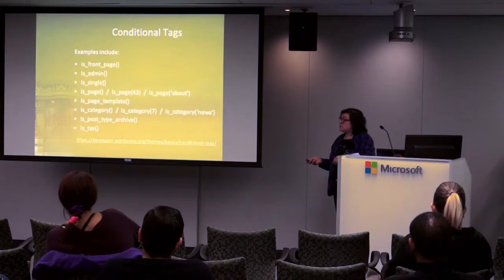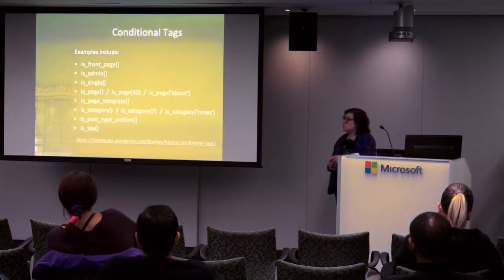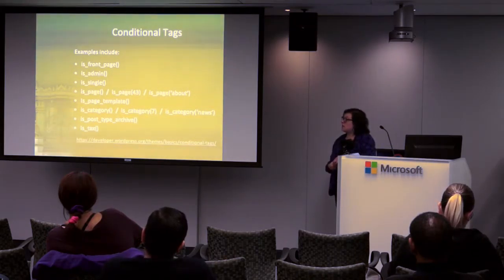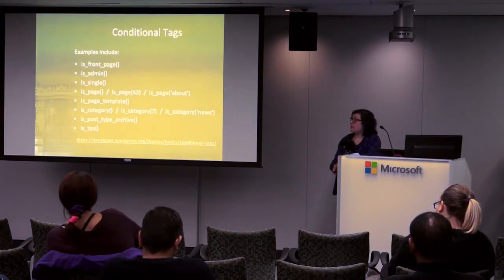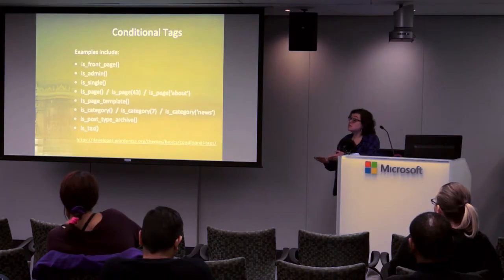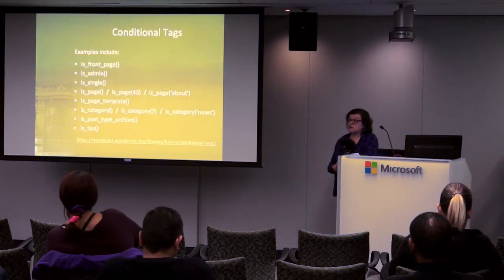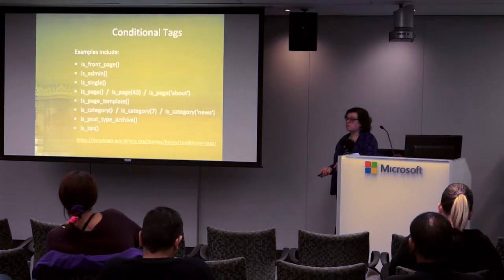is_page_template() checks if you're on a specific custom page template — usually for conditional display. is_category() works like is_page(): it tells you if you're on a category archive page, and you can pass a specific category name. Same with is_post_type_archive(). is_tax() checks for taxonomy pages. There are many more conditional tags — if you're wondering how to check what type of content you're on, chances are there's a conditional tag for it.